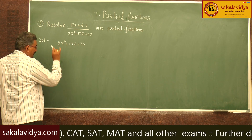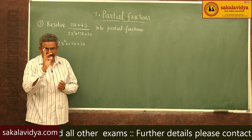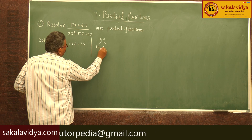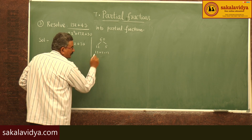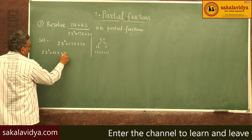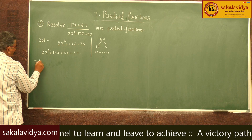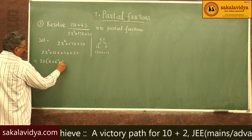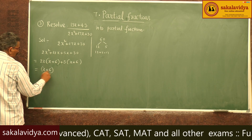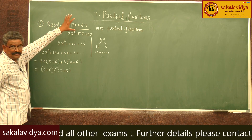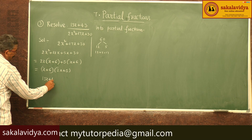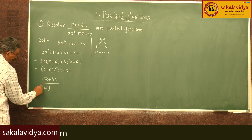For factorization of 2x²+17x+30: product is 2×30 = 60, sum is 17. The numbers are 12 and 5, since 12×5 = 60 and 12+5 = 17. So we write 2x²+12x+5x+30. Taking 2x common gives (x+6), and taking 5 common gives (x+6). So 2x²+17x+30 = (x+6)(2x+5). The fraction (13x+43)/((x+6)(2x+5)) is a proper fraction.